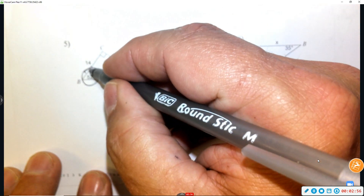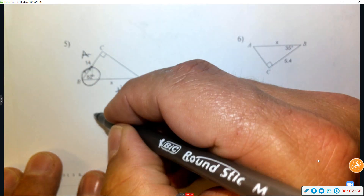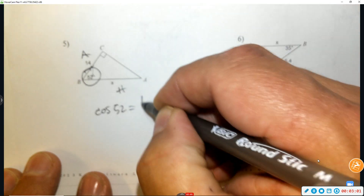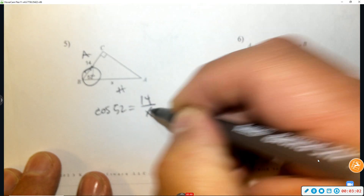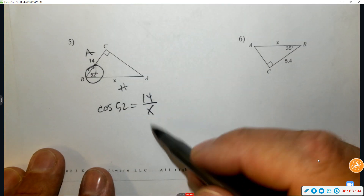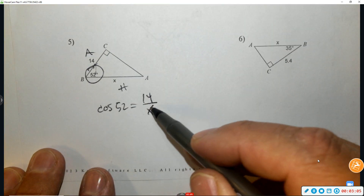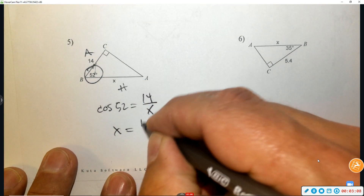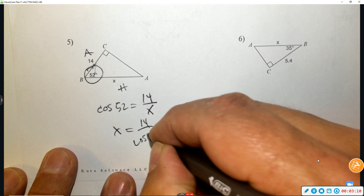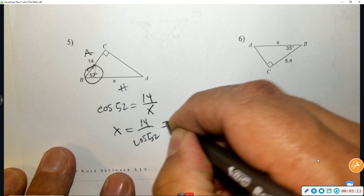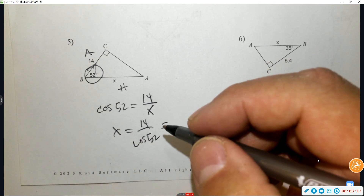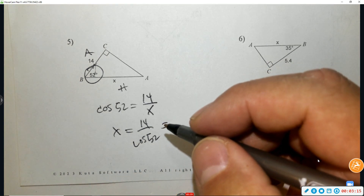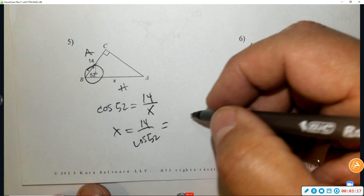Number five: that is adjacent and hypotenuse, so again it's cosine. Cosine of 52 equals adjacent over hypotenuse. Because x is in the denominator, they trade places, so it's 14 divided by cosine 52. You get 22.7.